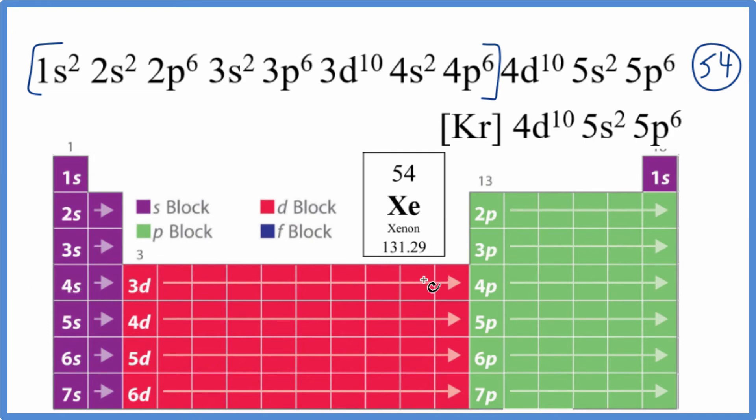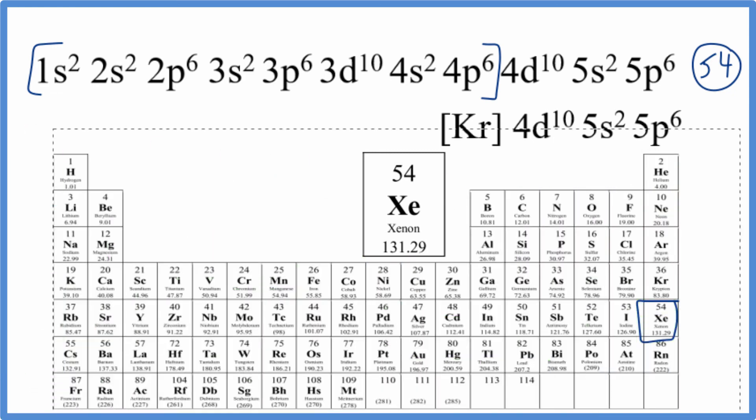From 4s², we go to 3d. D holds up to 10. So here's our 3d¹⁰. 4p⁶, 5s², 4d¹⁰. And finally, 5p: 1, 2, 3, 4, 5, 6. So here's our 5p⁶. And that turns out to be xenon, just like we found before.